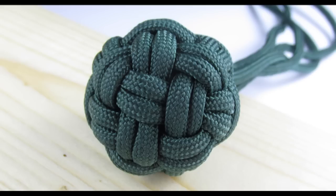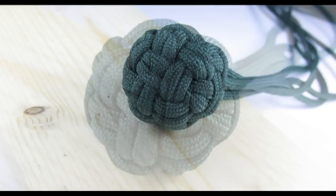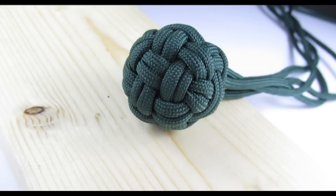There are many types of globe knots which differ in the number of faces or crossings that they have. Generally, the more crossings a globe knot has, the larger object it can cover.